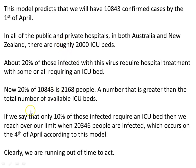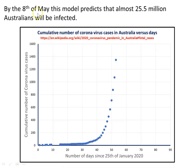Even if only 10% of infected people require an ICU bed, we reach our limit at around 20,346 total infected — which occurs on the 4th of April. The hospital system in this country and in New Zealand will be rapidly overrun. The critical issue is not the total number infected, but the ICU bed limit, because those in the critical stage need an ICU bed with a ventilator to keep them alive. We are running out of time and need to act soon.